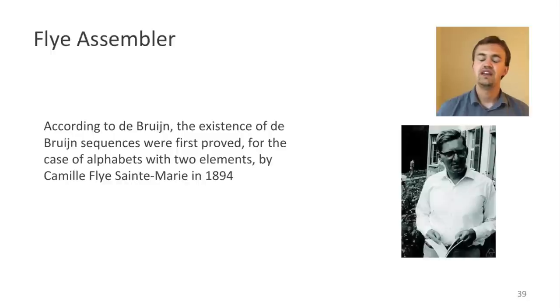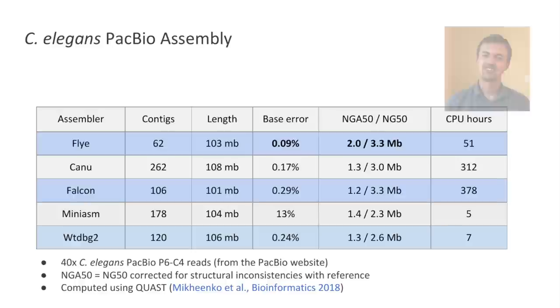So all these algorithms were implemented into Flye assembler. And the name of the tool is basically a tribute to French mathematician Camille Flye Sainte-Marie, who was actually the first to prove the existence of what we now know as de Bruijn sequences for the alphabet of size 2, and this was later acknowledged by de Bruijn himself. And finally, I want to give you some results that we were able to get with Flye.